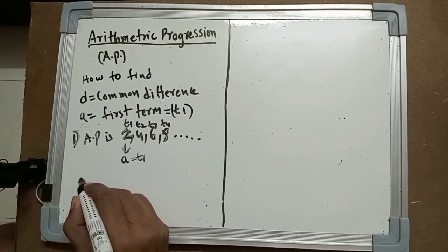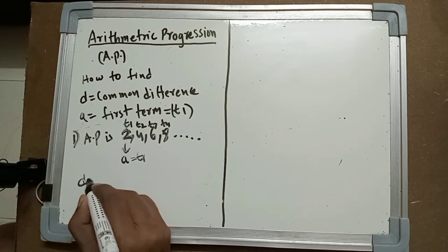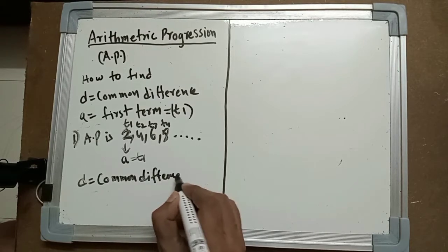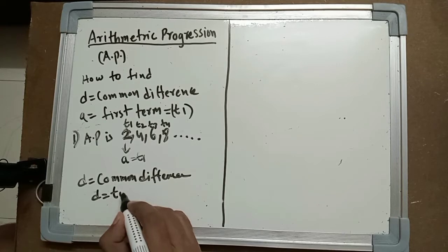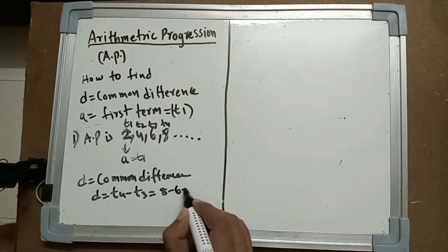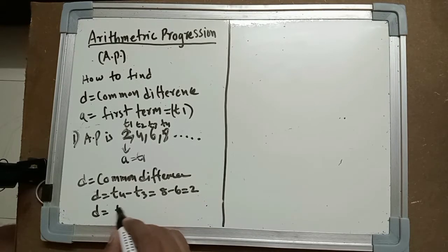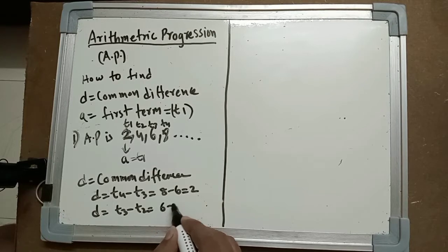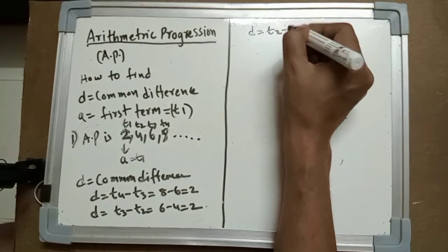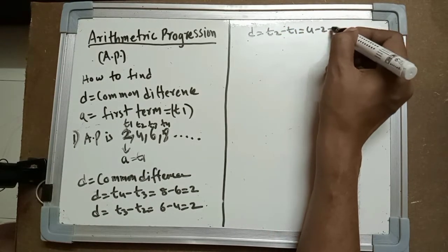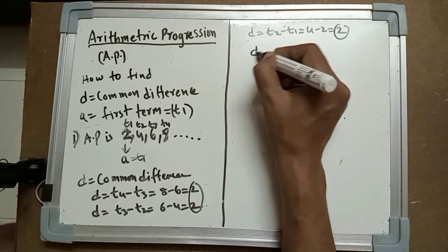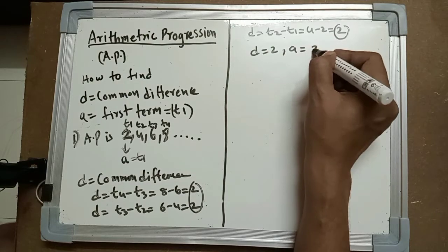Now we have to find the common difference d. So d equals t4 minus t3, which is 8 minus 6 equals 2. Again, d equals t3 minus t2, which is 6 minus 4 equals 2. And d equals t2 minus t1, which is 4 minus 2 equals 2. So the common difference d equals 2 and first term a equals 2.